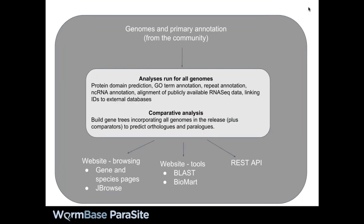Our genomes and primary annotation — by which I mean annotation of protein coding genes — come from the community. We're not generally in the business of annotating protein coding genes ourselves. If the community produces two different genome assemblies of the same species, we will take all of them. We don't choose one genome per species.